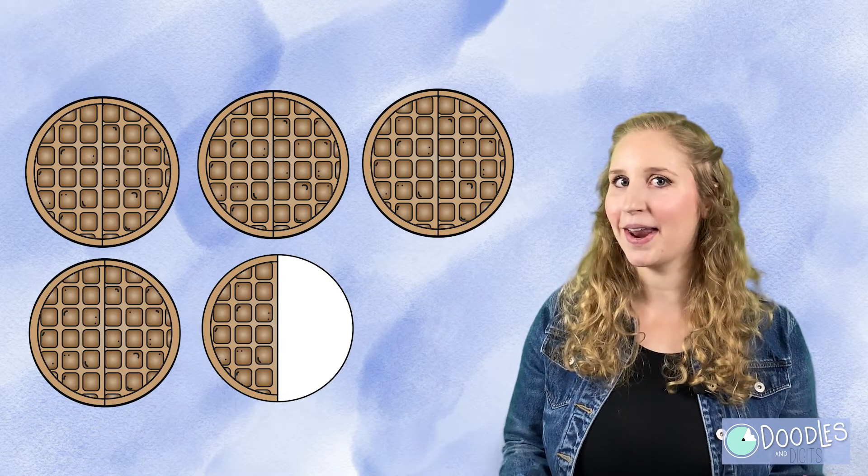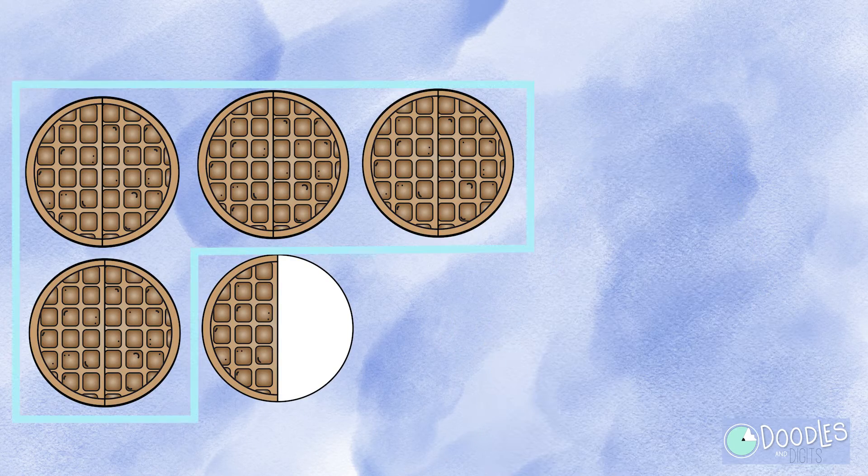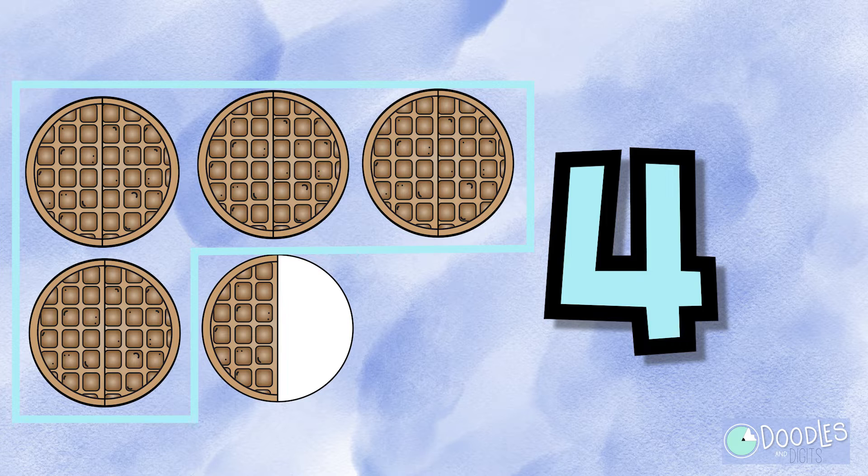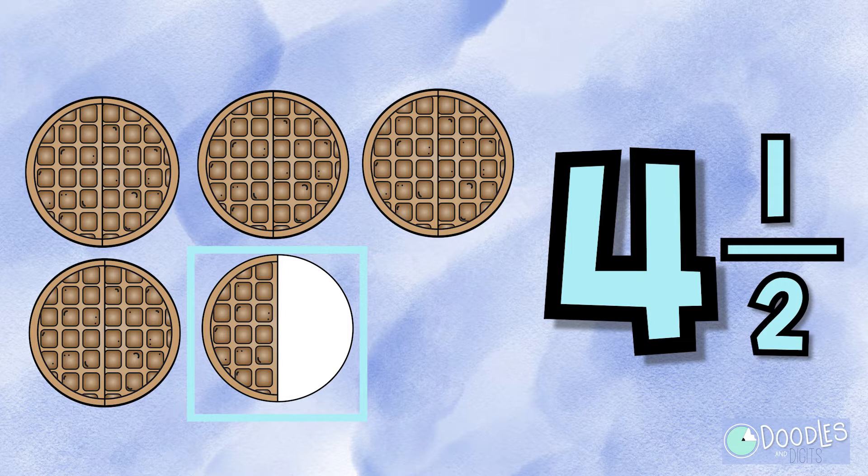Let's try another one. How about this? There are four whole waffles here, so our whole number is four. Then our fraction, there's one half of a waffle left over. So our mixed number is four and a half.